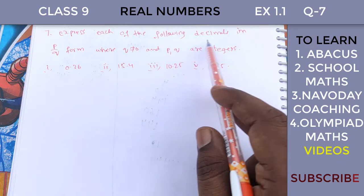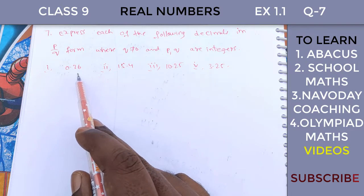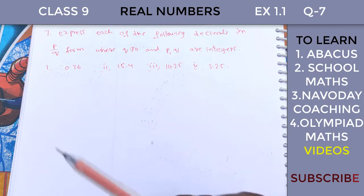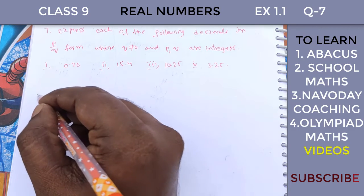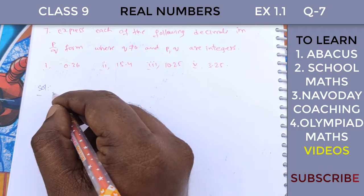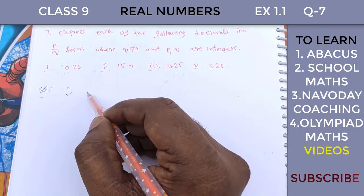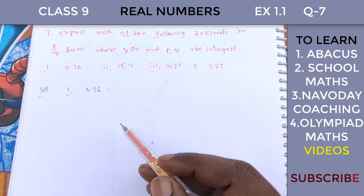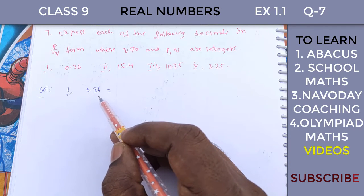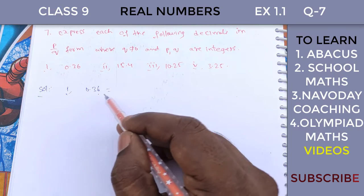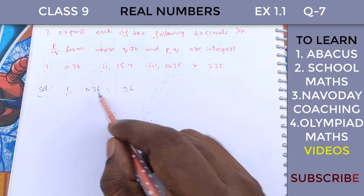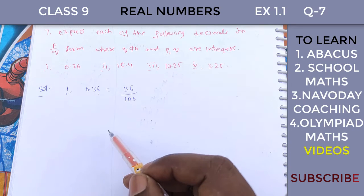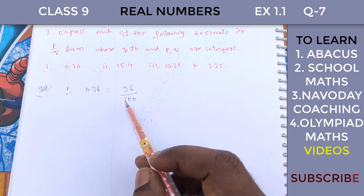Express each of the following decimals in p by q form. The first one is 0.36. As in the last video, when you have a decimal number, you convert it to a fraction by looking at what values are in the decimal and how many zeros are in the denominator. Then we simplify to get the simplified form.